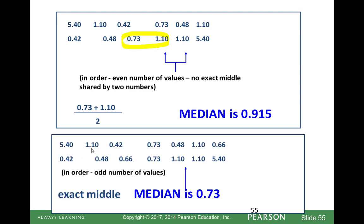We have one more data point example. Put them in order — we have 7 values. 7 plus 1 is 8, divided by 2 is 4. So the median is the 4th value, which is 0.73. It is the data value in the middle.